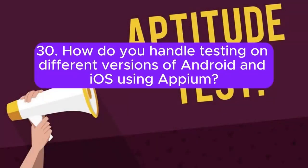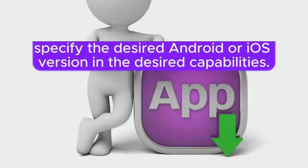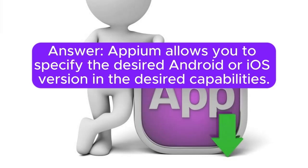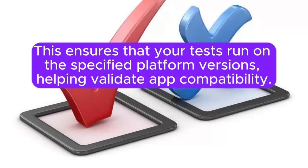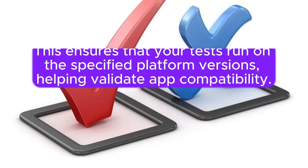30. How do you handle testing on different versions of Android and iOS using Appium? Appium allows you to specify the desired Android or iOS version in the desired capabilities. This ensures that your tests run on the specified platform versions, helping validate app compatibility.